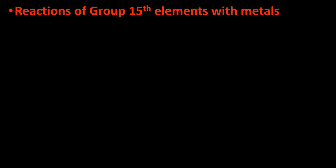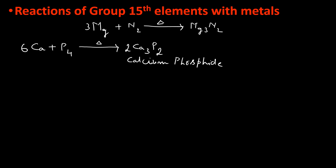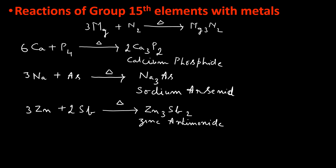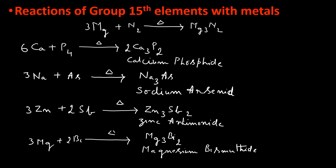Reactions of Group 15th Elements: Nitrogen combines with magnesium at high temperature to give magnesium nitride. Phosphorus combines with calcium to form calcium phosphide. Sodium combines with arsenic and sodium arsenide is formed. Zinc combines with antimony to give zinc antimony. Magnesium combines with bismuth to give magnesium bismuthide. In all these compounds, the general formula is M3E.